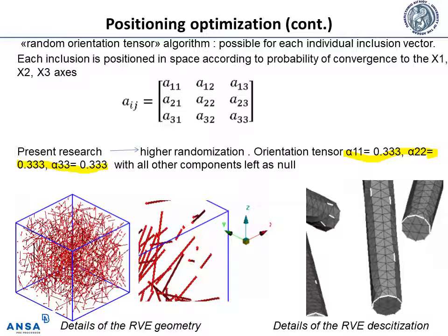The orientation tensor provides an efficient description of fiber orientation using a probability curve. With the application of the random orientation tensor algorithm, it becomes possible for each individual inclusion vector, among a multitude that are positioned iteratively in the matrix cube, to have its own position and orientation. Each inclusion is positioned in space according to a probability of convergence to the x1, x2, and x3 axes. In order to achieve a higher randomization of the placement of inclusions in the three-dimensional cube, specific values were used for the orientation tensor.